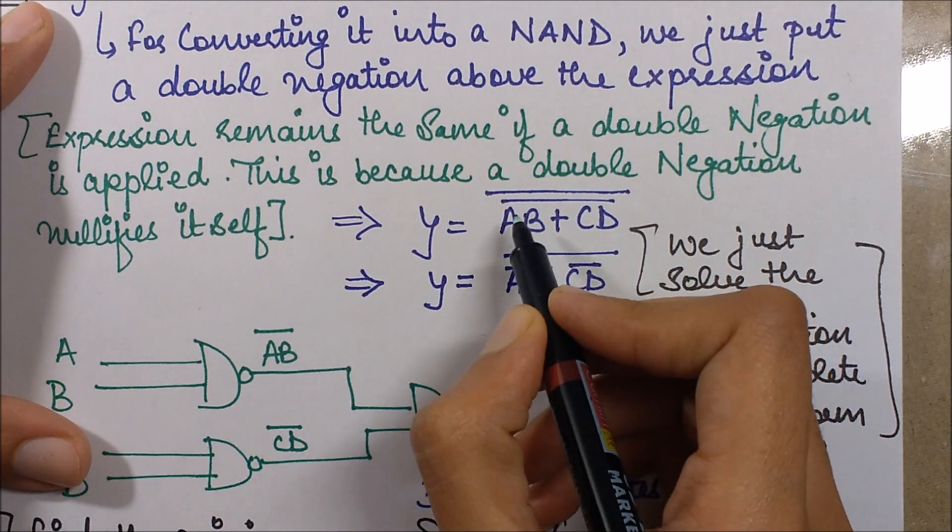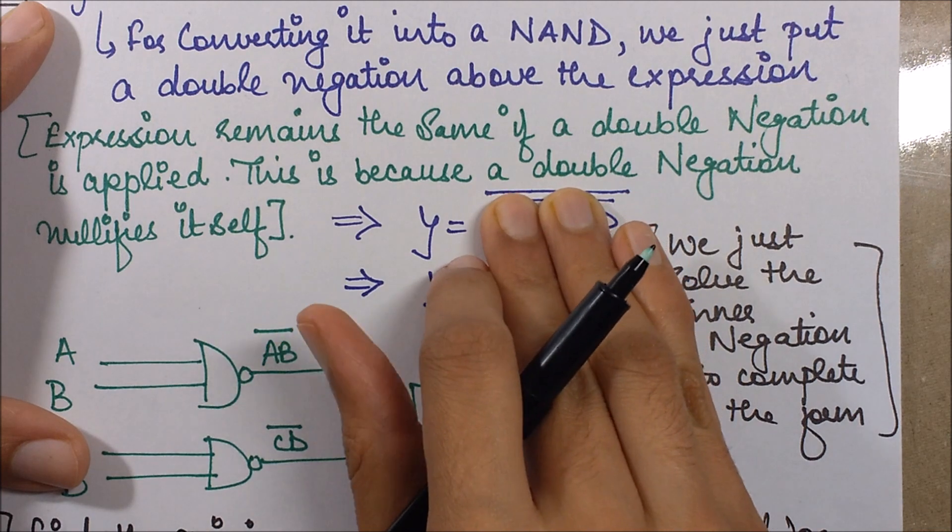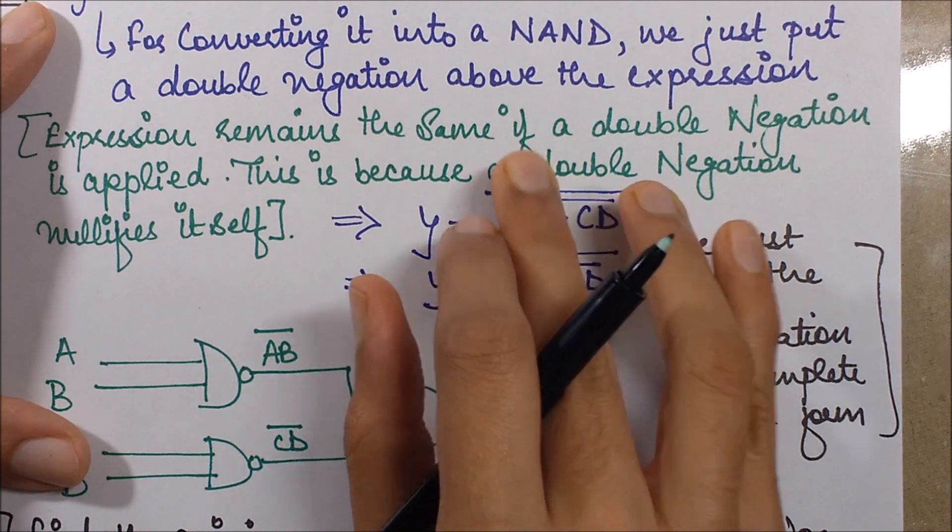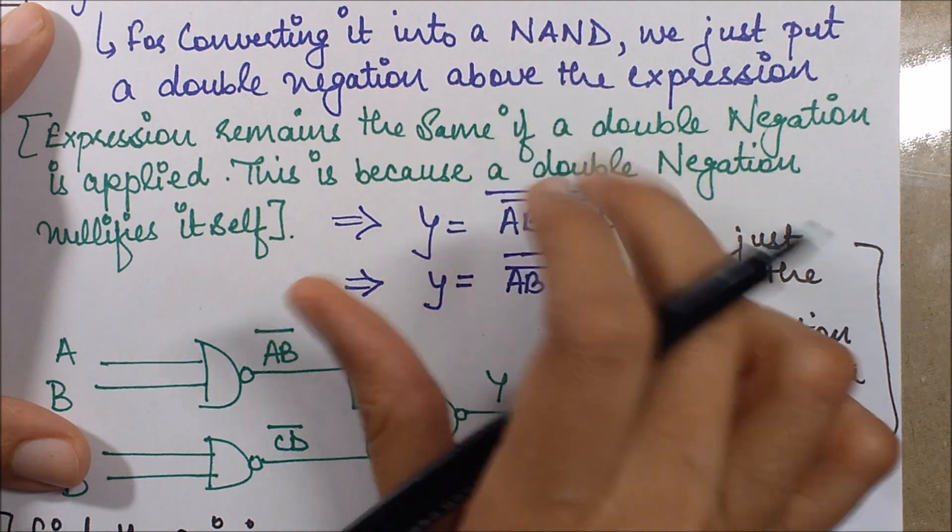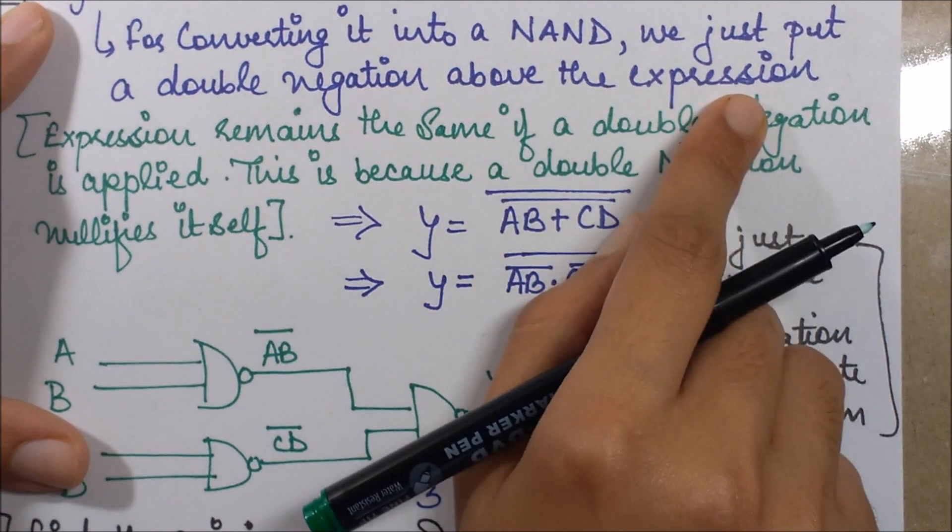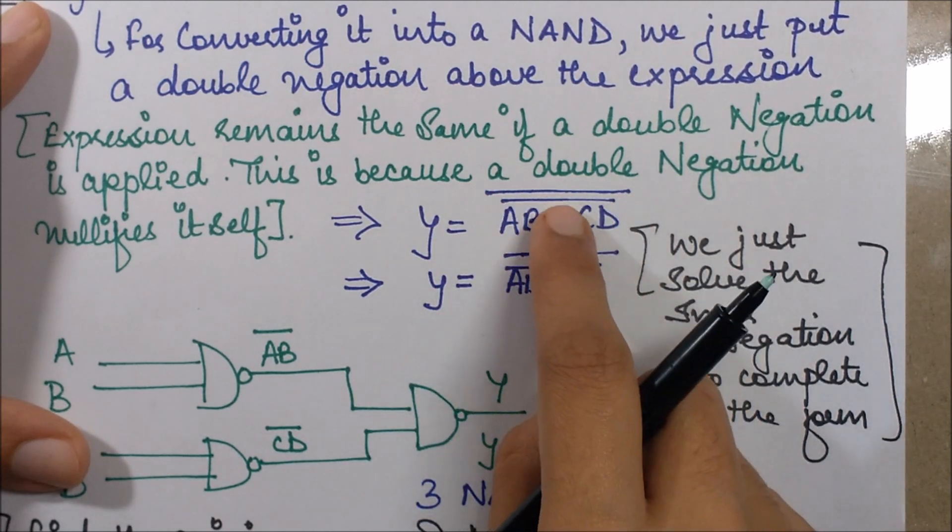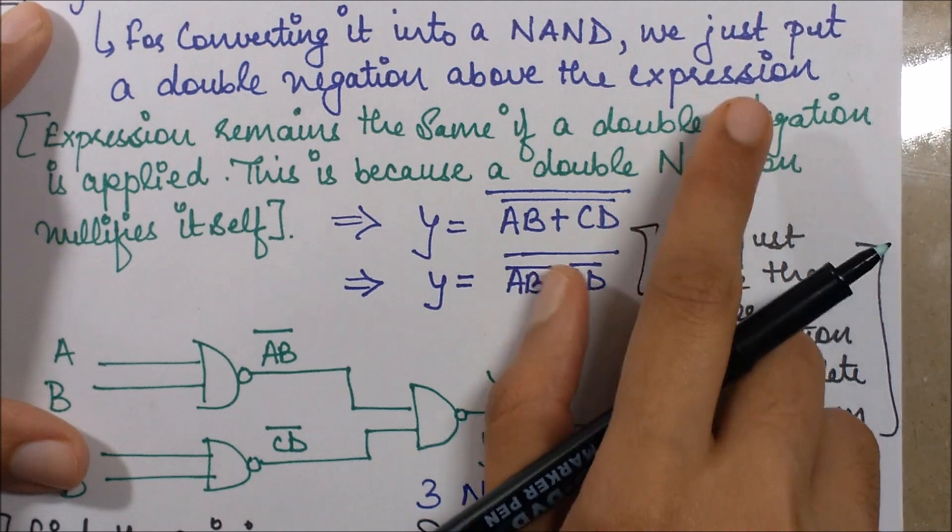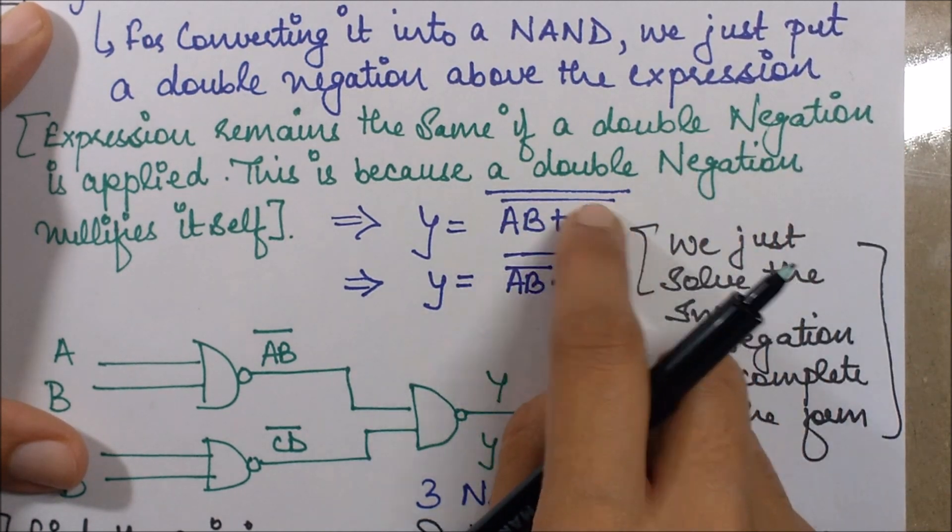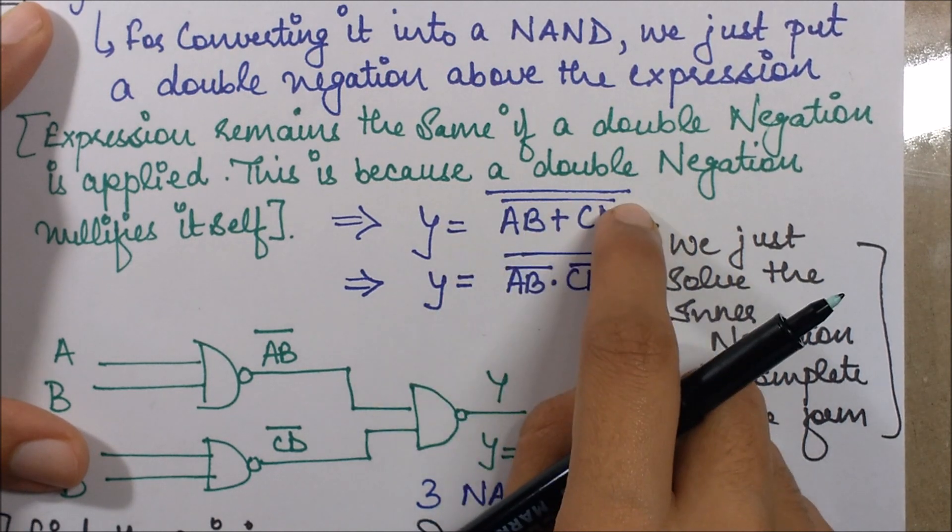I just applied a double negation and now I'll be solving the inner negation, because for NAND what I need is only the outer negation. Because what is NAND? NAND is a NOT of an AND, right? So I'll be solving the inner one by using De Morgan's law and the outer one I'll be keeping it safe for my NAND expression. So the inner one is the OR of two things and a NOT is applied above.